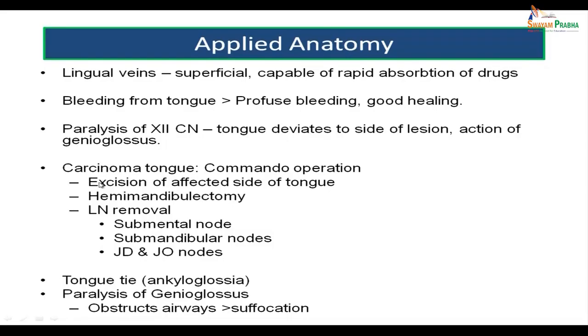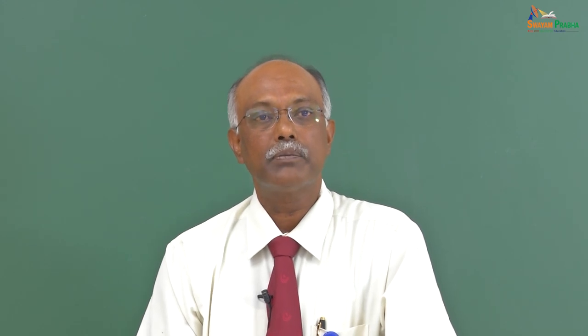Carcinoma of the tongue usually has a very rapid spread. What is done is a commando operation, in which the affected side of the tongue is removed, there is hemimandibulectomy — removal of the mandible on that side — and it involves extensive lymph node removal including the submental, submandibular, jugulodigastric, and jugulo-omohyoid groups of lymph nodes on both sides.